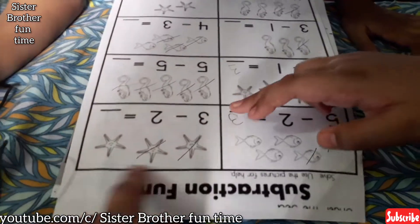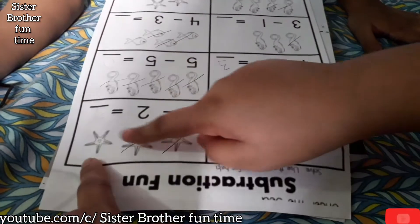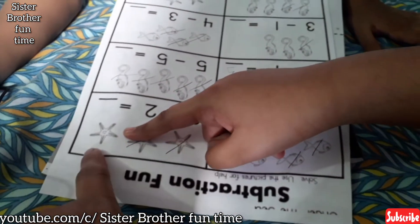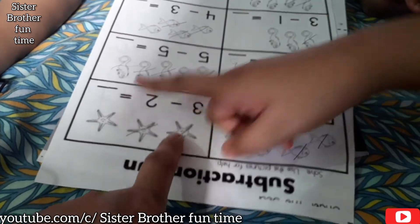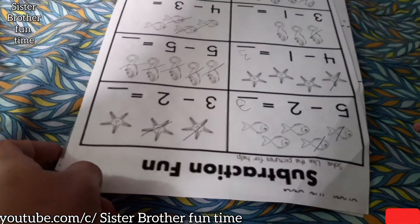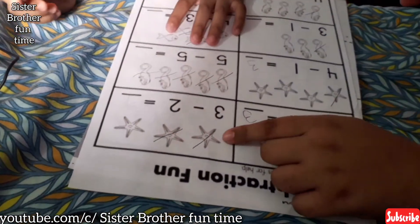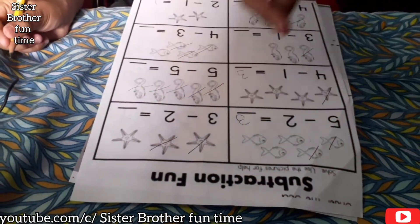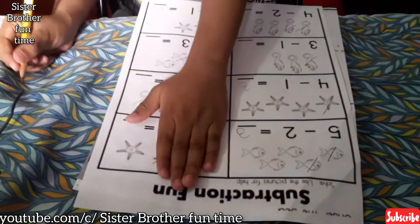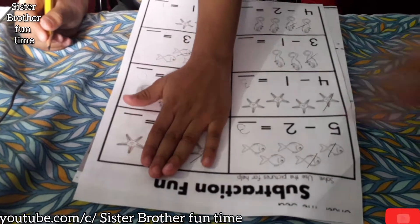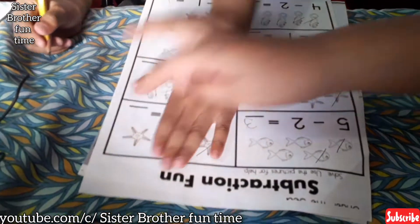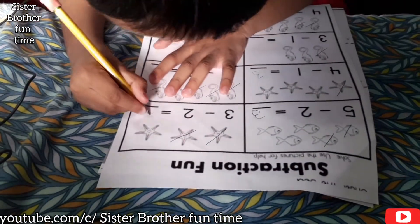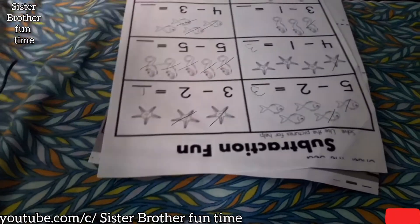Okay, Masha, three minus two. How many starfish are there? One. Because we crossed out two of them. We crossed out two starfish. So put one. Three minus two equals? One. Good.